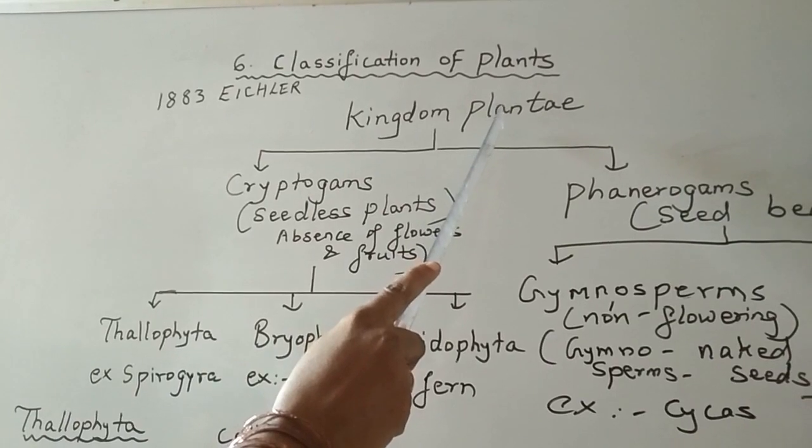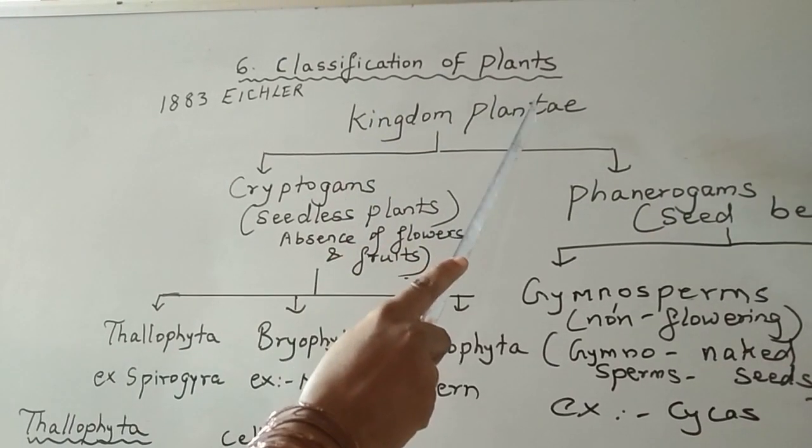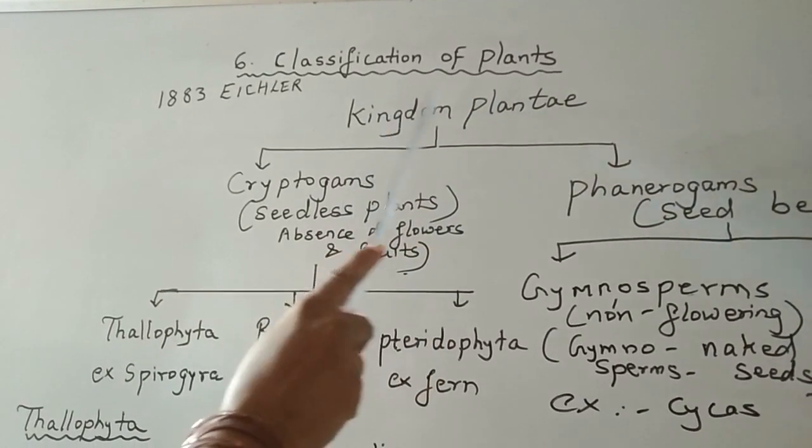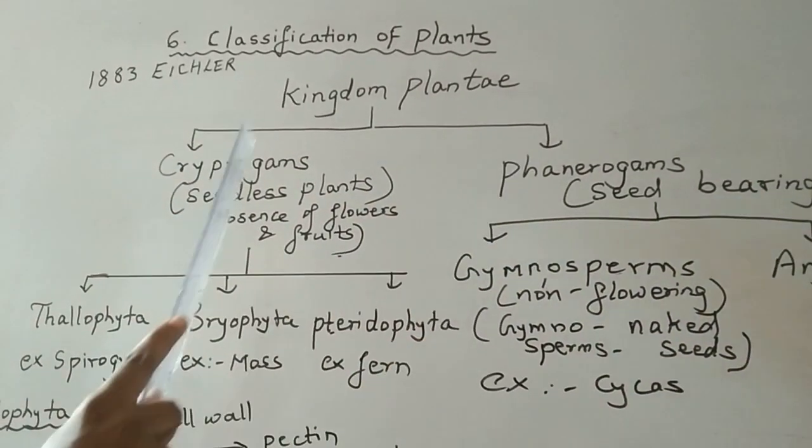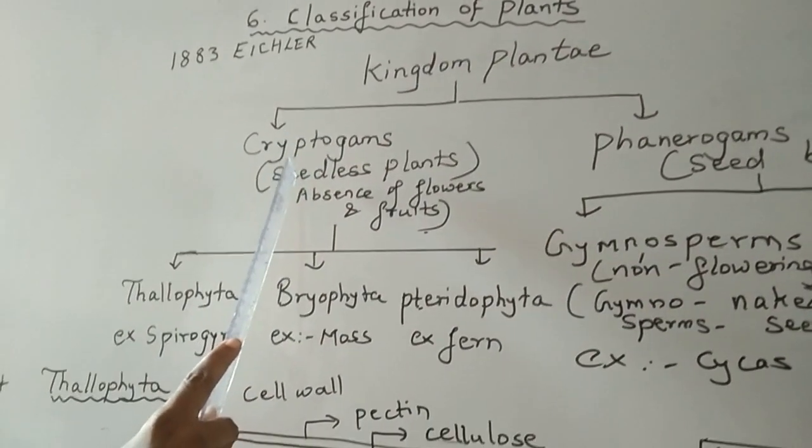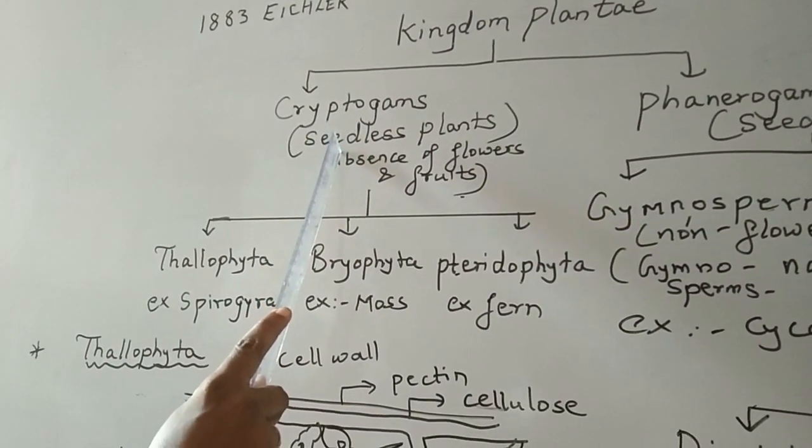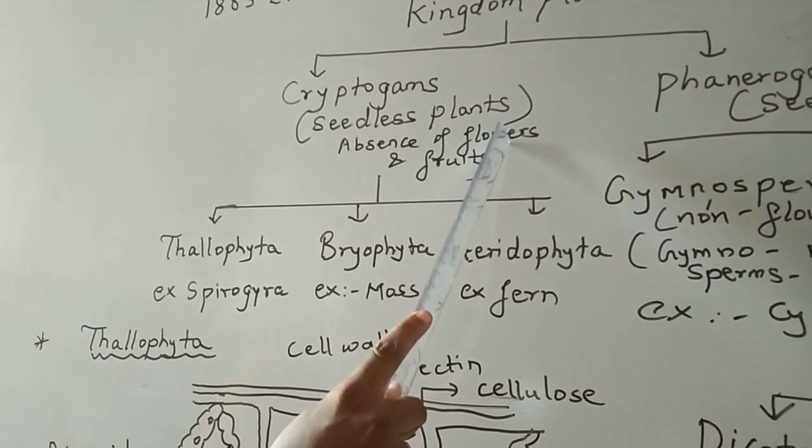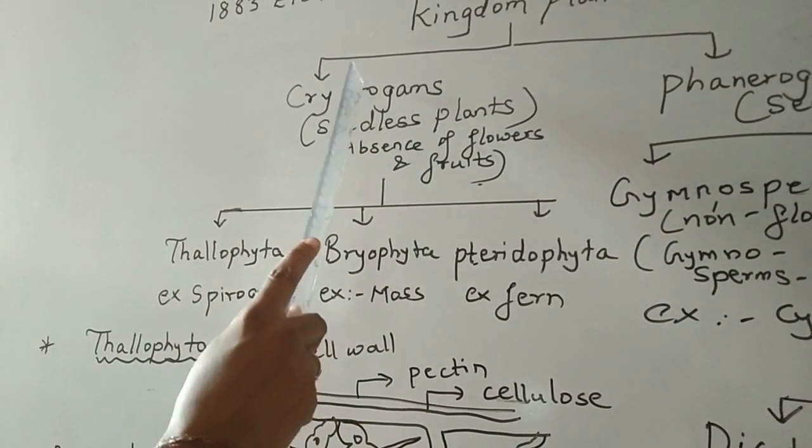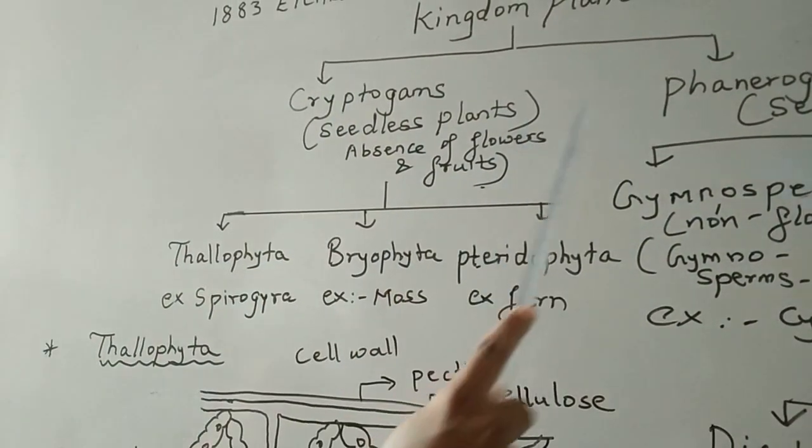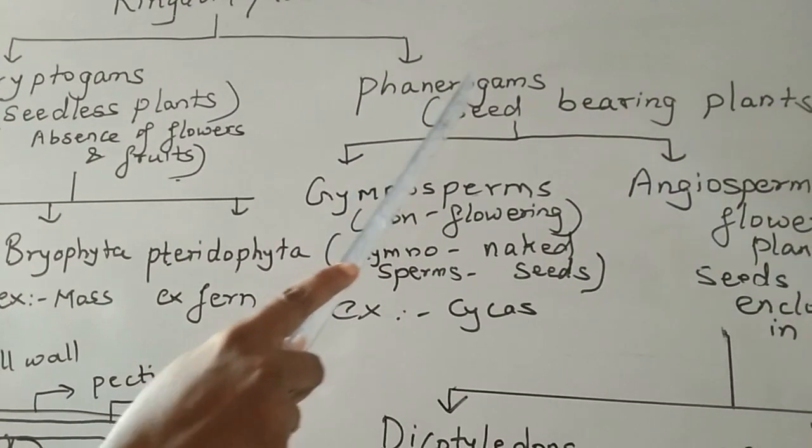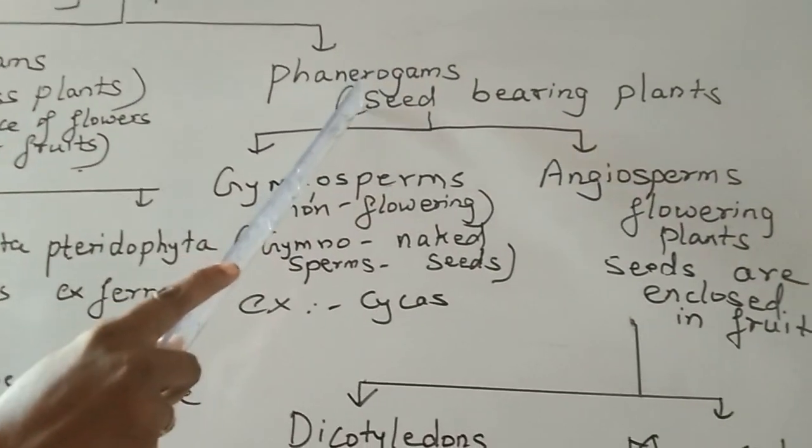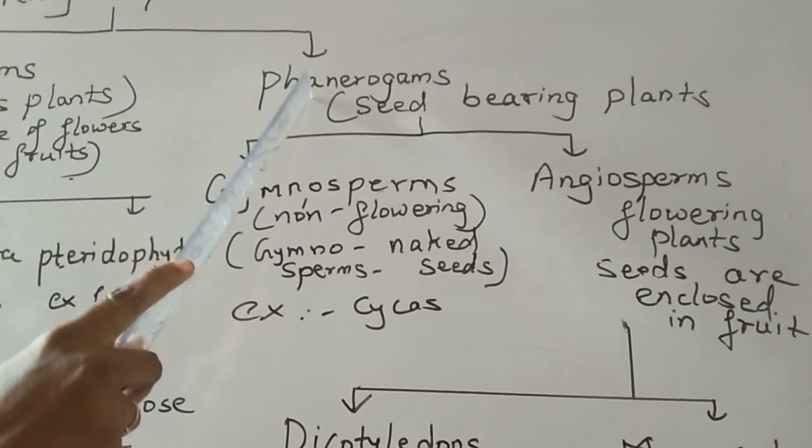We are classifying the plants under kingdom plantae. Kingdom plantae is divided into two types: cryptogams and phanerogams. Cryptogams are those plants which do not bear seeds or flowers and fruits. Phanerogams are those plants which have seeds.